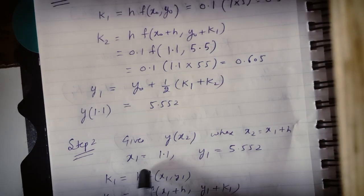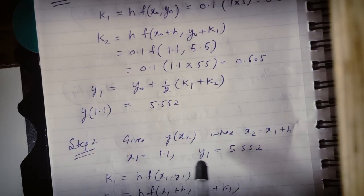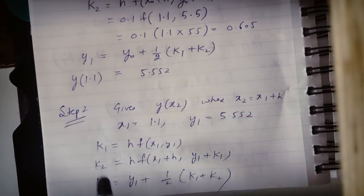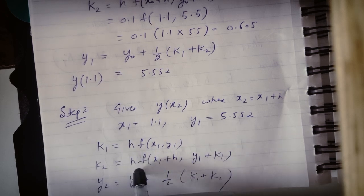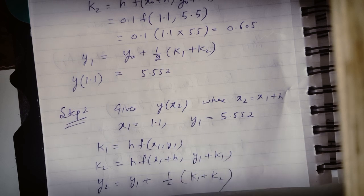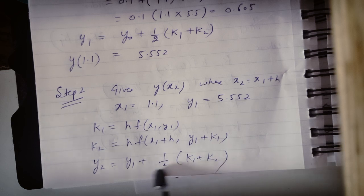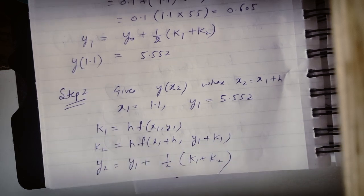Step 2: Now we find y at x2. x1 equals 1.1, y1 equals 5.552. k1 becomes h into f of x1, y1; k2 becomes h into f of x1 plus h, y1 plus k1; and y2 becomes y1 plus half of k1 plus k2. Substituting these values gives y2. Similarly we find y3, y4, and so on, continuing until we reach the desired value at x equals 1.5.